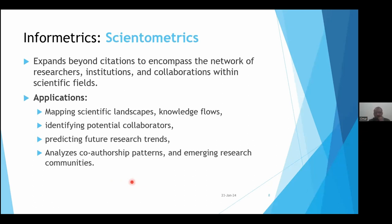Scientometrics expands beyond citations — which are usually discussed in bibliometrics — to encompass the network of researchers like collaboration networks, co-authorship networks, institutional collaborations, and scientific fields. Applications include mapping scientific landscapes, analysis of knowledge flows, identifying potential collaborations between authors, institutes, countries, and research ideas, predicting future research trends, and analyzing co-authorship patterns and emerging research communities.